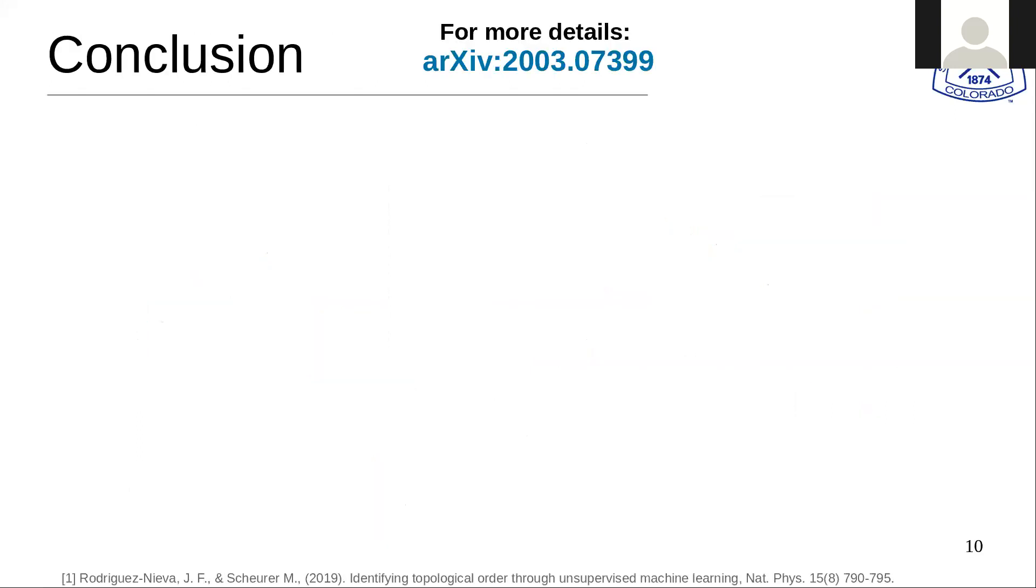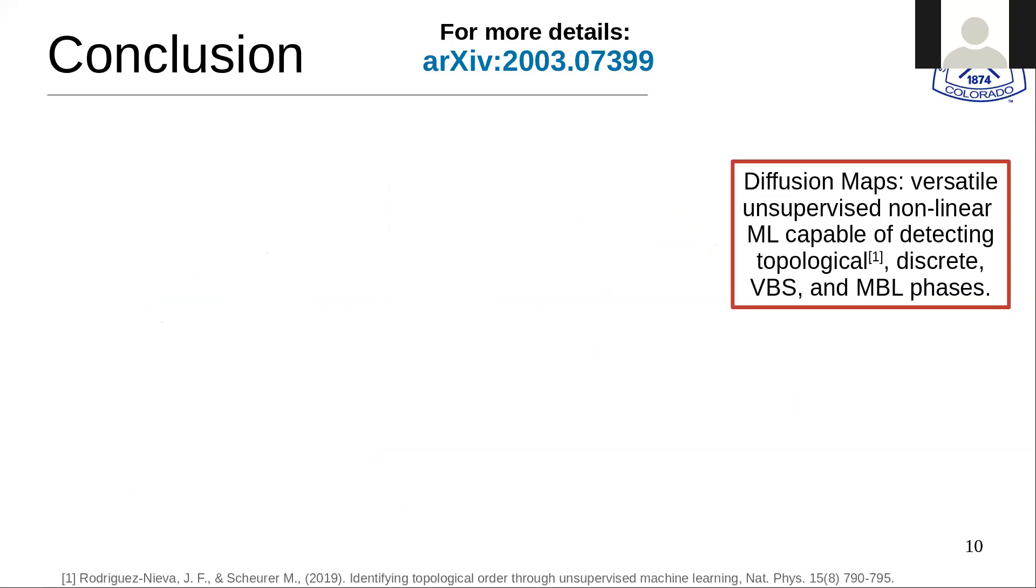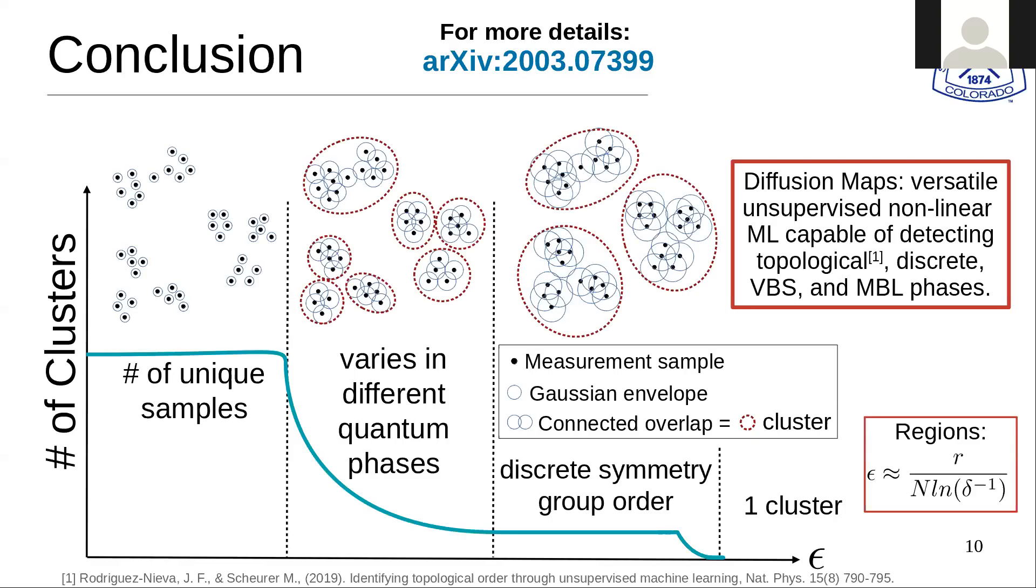For more details, please see our paper on arXiv. In conclusion, these diffusion maps are a very versatile unsupervised nonlinear machine learning tool that are capable of detecting topological, as shown in the citation below, and discrete valence bond and many body localized phases, as well as their phase transitions and can even detect the discrete symmetry present in your system. Going back to that takeaway and overview, it elucidates many different physical features in your data set.